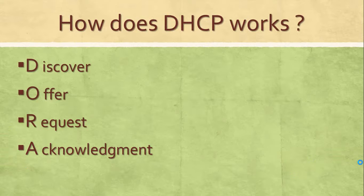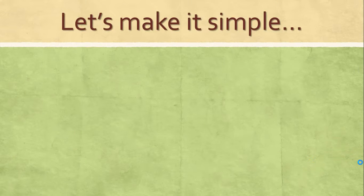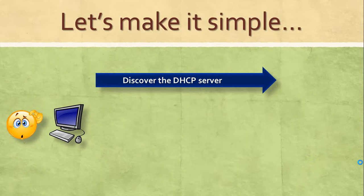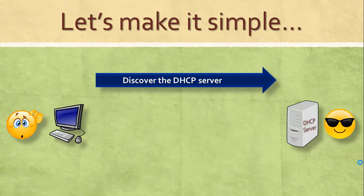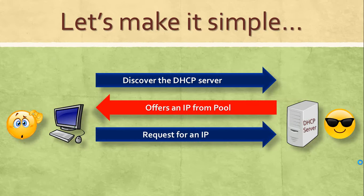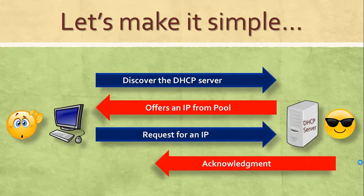Let's make it simple again. You are on your computer trying to discover the DHCP server. Once you find the DHCP server, it will offer an IP address from the pool of IPs. You then select one IP address and request that IP address from the DHCP server.